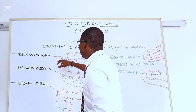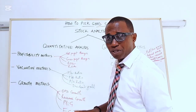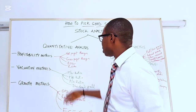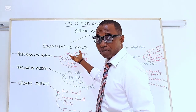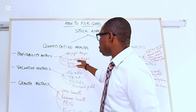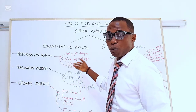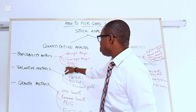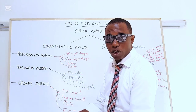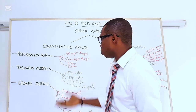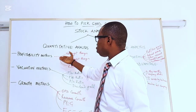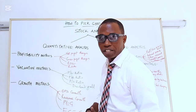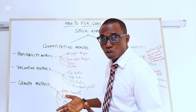First, profitability metrics — this tells you how profitable the company is. You look at the net profit margin, the gross profit margin, return on equity, and return on assets. Net profit margin is called the bottom line, meaning out of the revenue they make, what percentage were they able to turn into net profits.